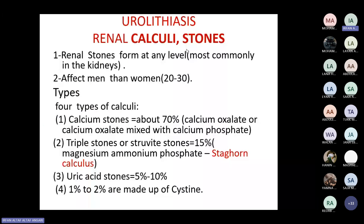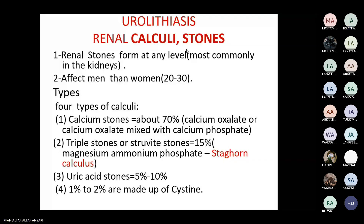Now we go to stone formation. Stasis of urine due to obstruction leads to stone formation — known as renal stones, renal calculi, or urolithiasis. This can happen at any level — urethra, bladder, or kidneys. Stones affect men more commonly than women.